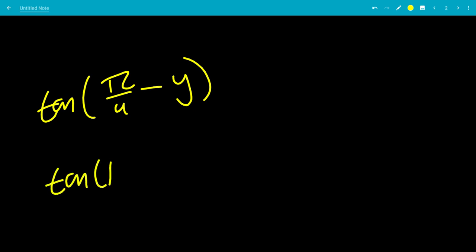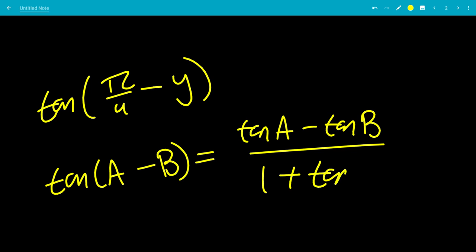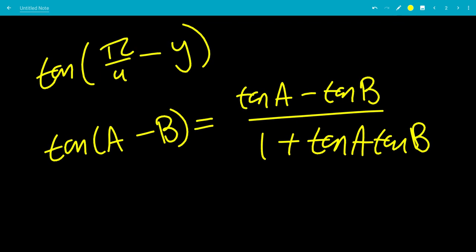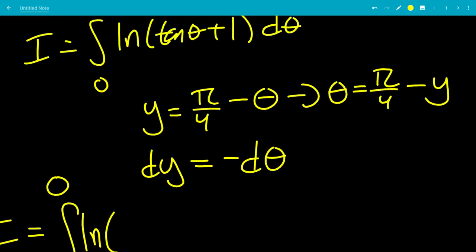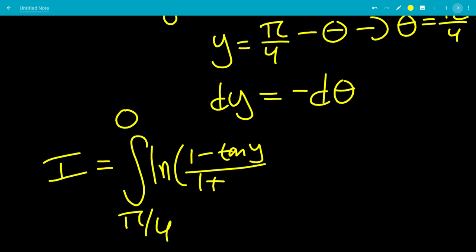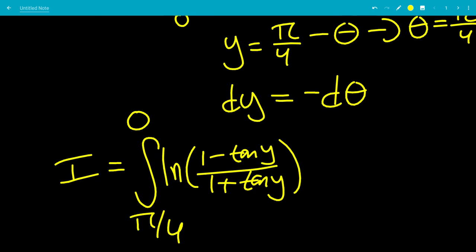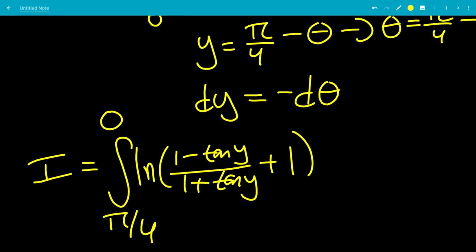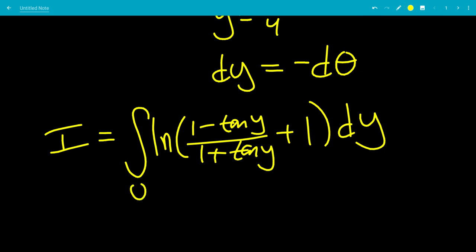We apply the tangent subtraction formula: tan(a - b) = (tan a - tan b) / (1 + tan a · tan b). With a = pi over 4, tan(pi over 4) = 1, so tangent of (pi over 4 minus y) equals (1 - tan y) / (1 + tan y). Therefore i equals the integral from 0 to pi over 4 of ln of [(1 - tan y)/(1 + tan y) + 1] d y.